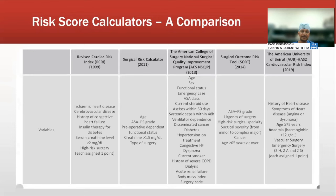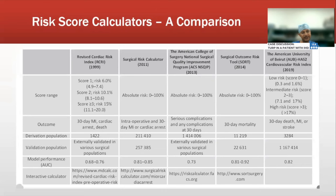Other risk calculators include the ACS NSQIP Surgical Risk Calculator, the Surgical Outcome Risk Tool, and the American University of Beirut Surgical Risk Index. In the Revised Cardiac Risk Index, one factor positive gives approximately 6% risk of major adverse cardiac events; two factors gives 10.1%; and three or more factors gives 15%. These online calculators allow entry of patient data to generate a specific risk profile.